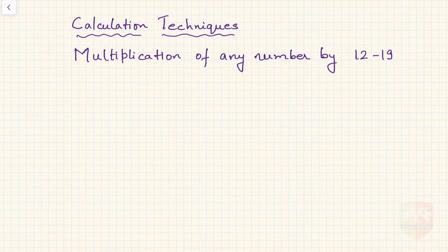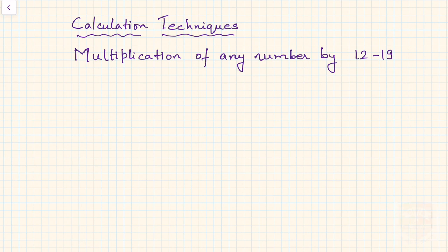Welcome friends. We are here to discuss another calculation technique — this time, multiplication of any given number by a two-digit number from 12 to 19. This will be a very handy tool while you are doing calculations in mathematics, physics, chemistry, or any other subject. If you practice a little bit, this technique can be perfected and you will find it easier to calculate such multiplications.